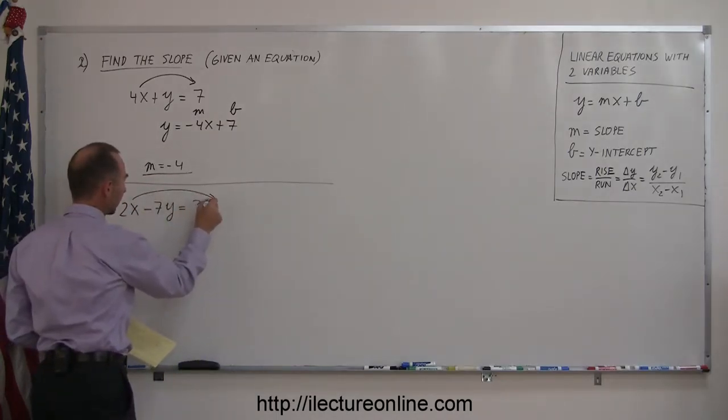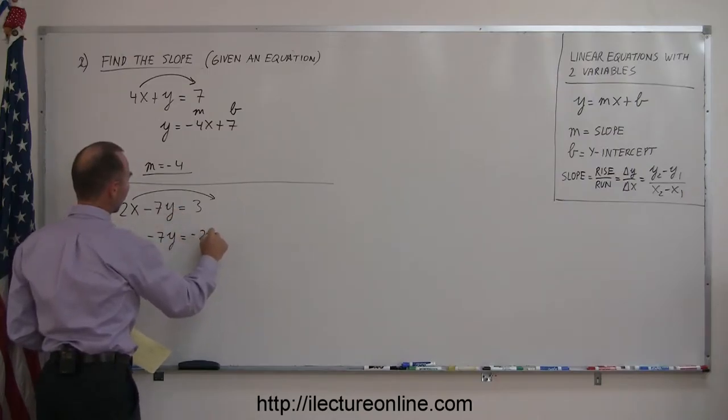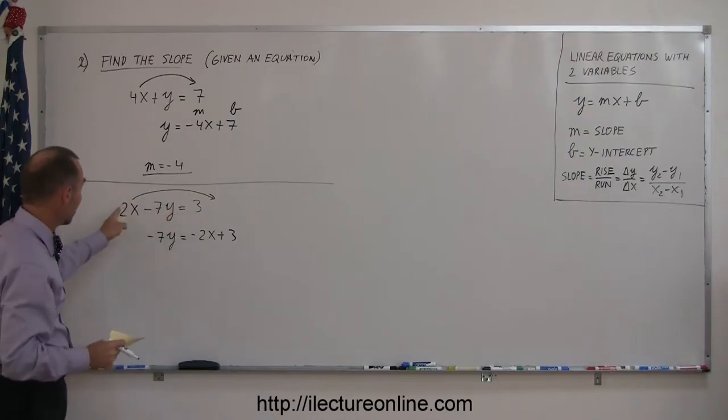Now, we have minus 7y equals minus 2x plus 3. Remember, when you move anything across the equal sign, you must change the sign.